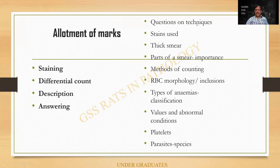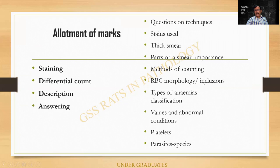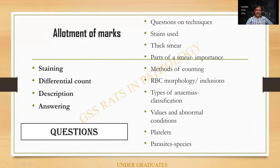So there can be questions on techniques: What are the causes for error? What are the various stains that can be used? What is a thick smear? Thick smear is used for malaria — within a small field you can see a lot of cells, making screening easier. What are the parts of the smear? What are the different methods of counting — battlement method? RBC morphological changes and inclusions? Anemia classification is definite. Leukemia — you should know the various values, abnormal conditions where they are increased or decreased. Platelets and parasites — they can ask you the various species.